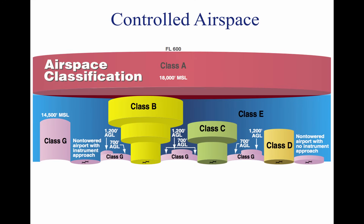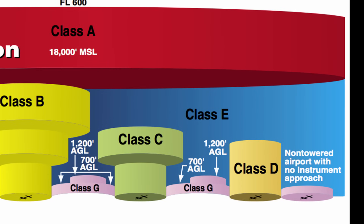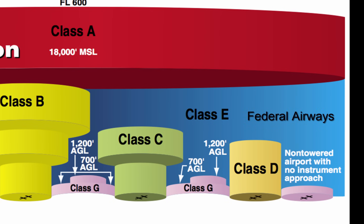If the airspace is not A, B, C, or D, but it is still controlled, then it is Class E airspace. Class E airspace extends upward from either the surface or a designated altitude to the overlying or adjacent controlled airspace. When given a surface area, it is meant to contain all instrument procedures. Also in this airspace are federal airways, which begin from either 700 or 1,200 feet off the ground and are used to transition to and from terminal areas or en route environments. Unless noted, Class E airspace begins over the United States at 14,000 feet above sea level up to 18,000 feet.